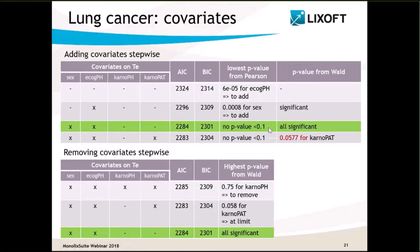However, remember that the goal of this study was to assess the prognosis power of Karnofsky score assessed by the patients themselves. When I add this covariate, it does decrease a little bit the AIC but not the BIC, and the p-value associated with the Wald test is not very low, meaning that the covariate effect is very small. The final model includes the Gompertz structural model and the covariates sex and ECOG_ph on the scale parameter TE. Including Karnofsky patient shows only a very small improvement.